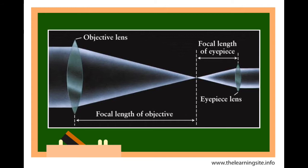An eyepiece is a type of lens attached to a variety of optical devices such as telescopes and microscopes. It gets its name because it is usually the lens that is closest to the eye when someone looks through the device.